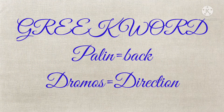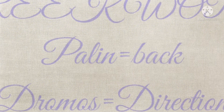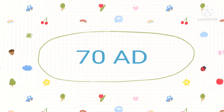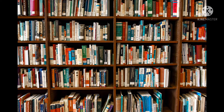History of palindrome: the word palindrome is derived from the Greek word 'palin', which means 'back', and 'dromos', which means 'direction'. These palindromes date back to about 70 AD.